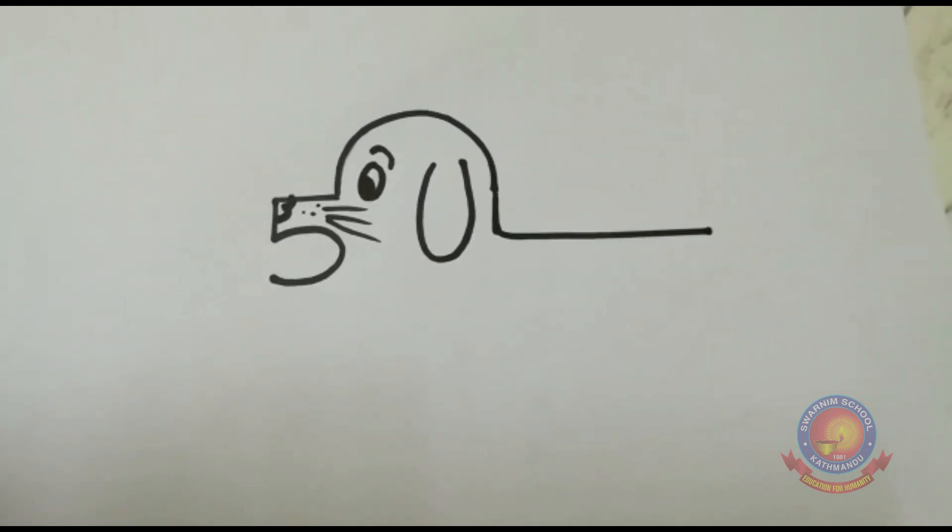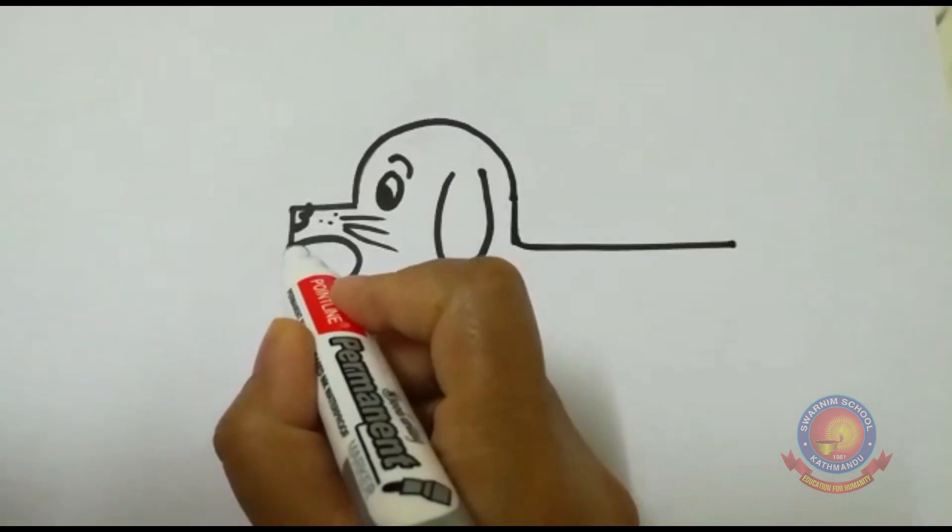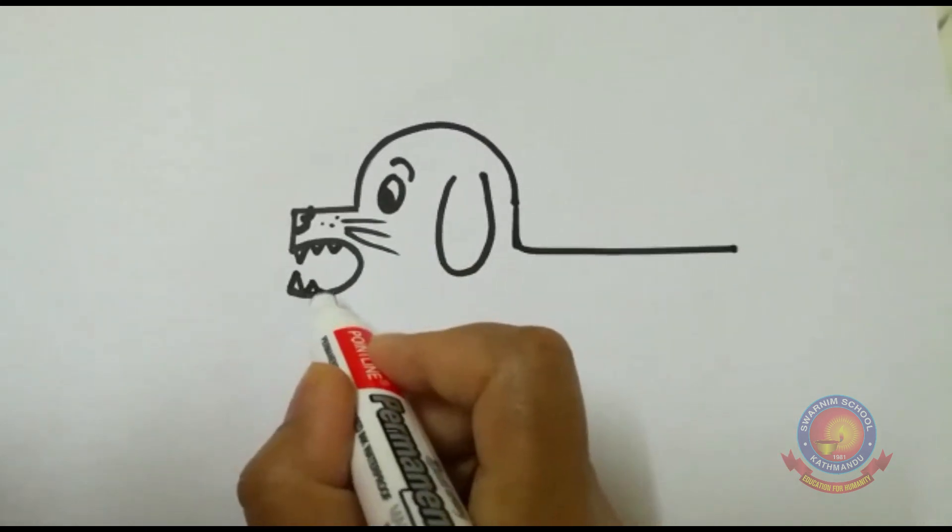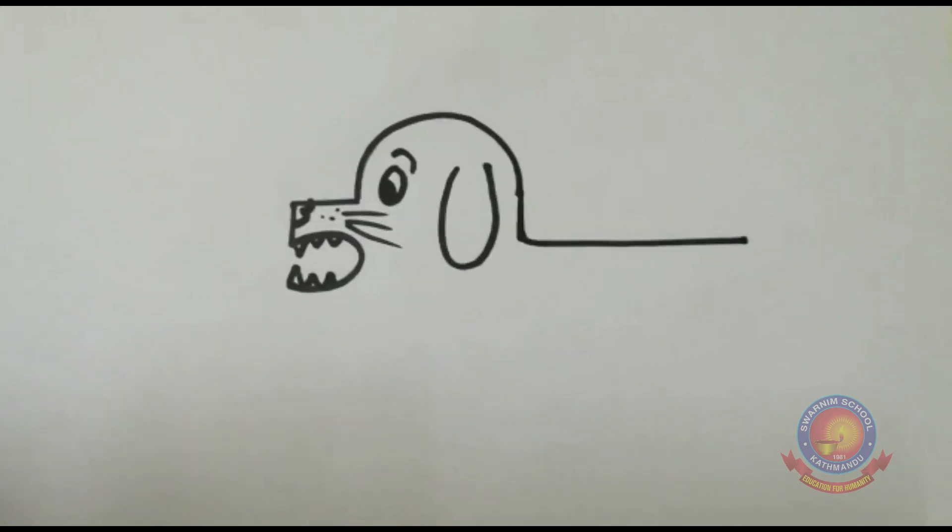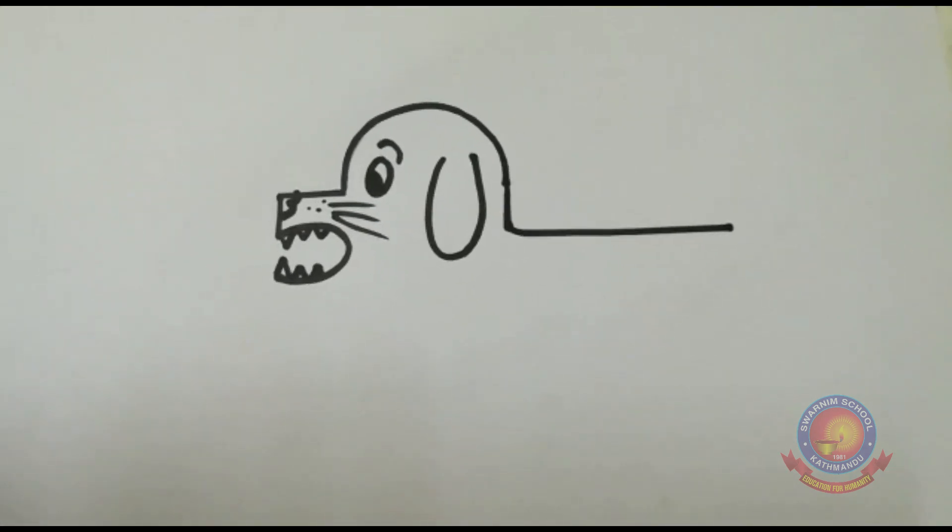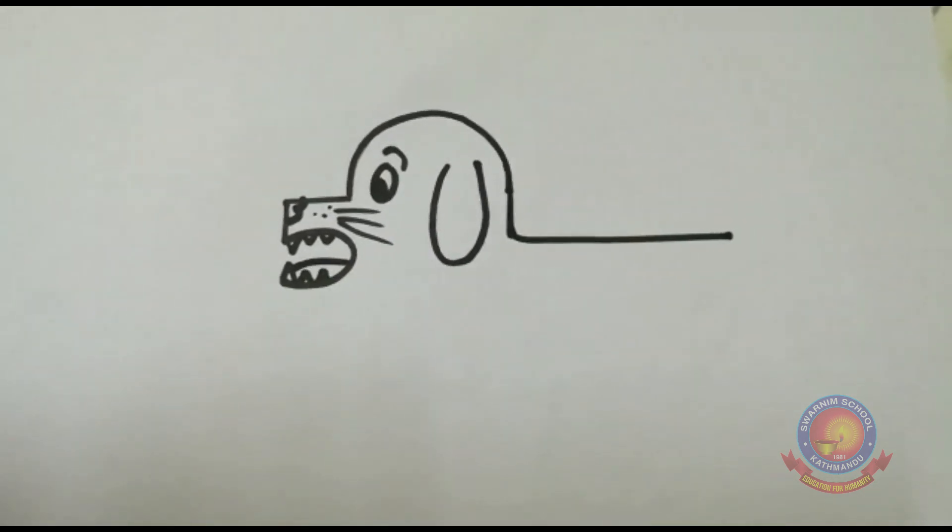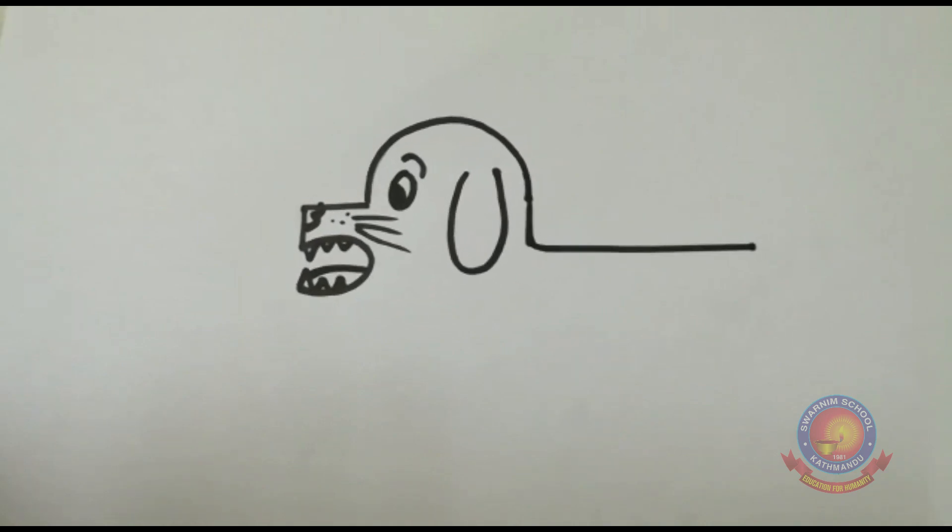Now let's make very sharp teeth. How to make teeth? Very simple. Triangle, triangle, triangle. You see? Oh, this teeth looks very sharp. Now let's make one line for tongue. This much clear?